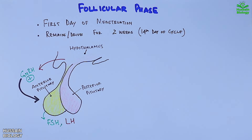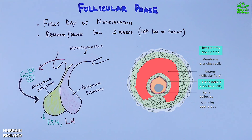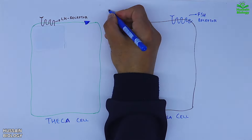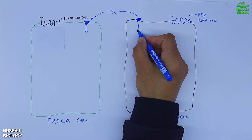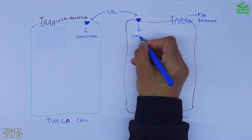In the diagram, a secondary follicle is shown with an oocyte in the center, surrounded by granulosa cells, and an outer layer of theca cells. FSH and LH target these theca and granulosa cells. The theca cell has an LH receptor and the granulosa cell has an FSH receptor. LDL molecules enter both cells and are converted into cholesterol.